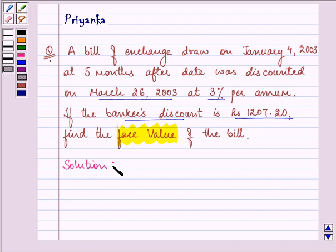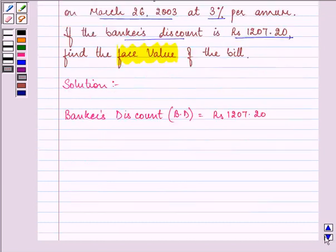So here we are given banker's discount equal to Rs. 1207.20. Further, we are given the rate of interest charged is 3% per annum.